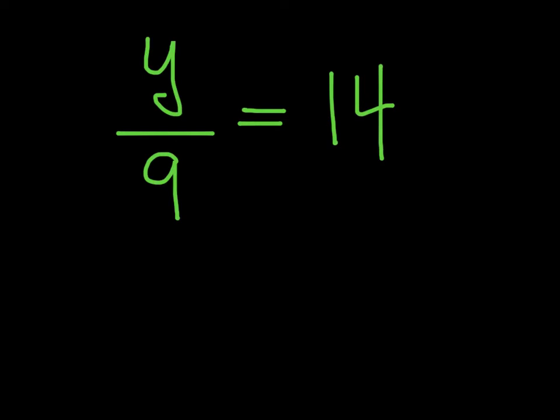Using the multiplication property of equality, I know that I can multiply both sides of the equation by 9 to isolate my variable.